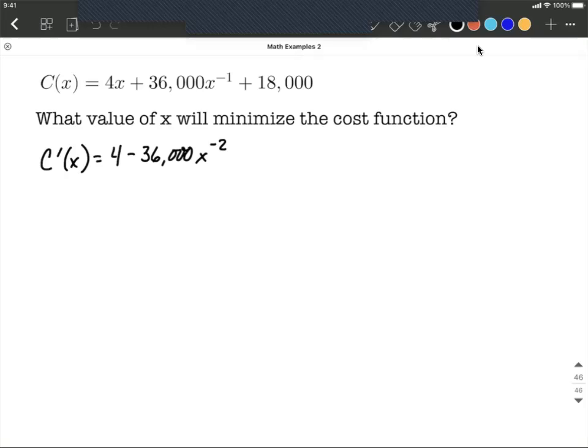Now we could rewrite this if we wanted to as 4 minus 36,000 over x to the positive second power. Just rewriting without that negative exponent, rewriting it with a positive exponent.